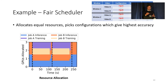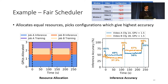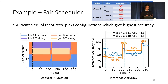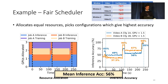This is what the resource allocation over time would look like with a fair scheduler — equal resources allocated to all jobs. As the inference accuracy plot shows, this is a poor choice. Retraining starts at t=0 for both jobs and completes at t=100, but it leaves very little time to exploit the model before it must be retrained again. The same pattern repeats in window two. Overall, we get a mean inference accuracy of 56%.